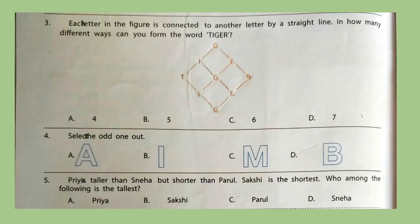Question 5: Priya is taller than Sneha but shorter than Parul. Sakshi is the shortest. Who among the following is the tallest? Correct answer is option C, Parul.